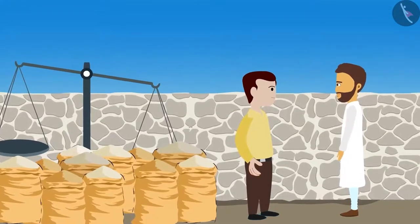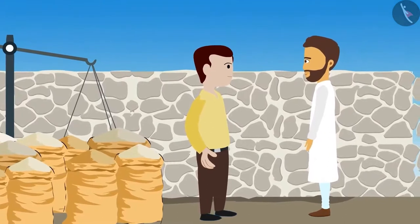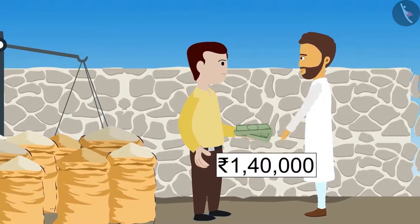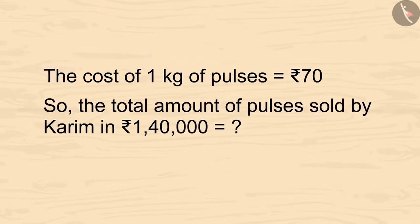Karim is going to the market to sell his pulses. The shopkeeper gives him 1 lakh 40 thousand rupees. Karim is very happy. Kids, if the selling price of 1 kg of pulses is 70 rupees, then how many kgs of pulses did Karim sell? You can pause the video and calculate it.